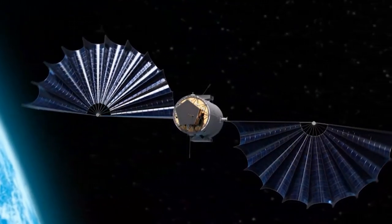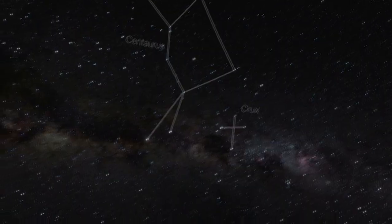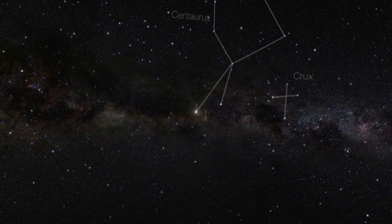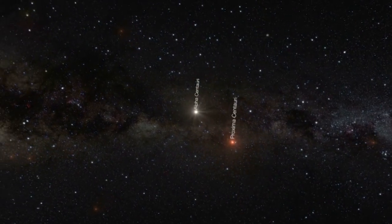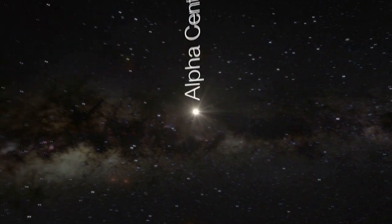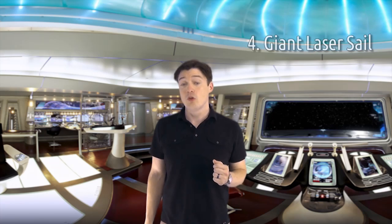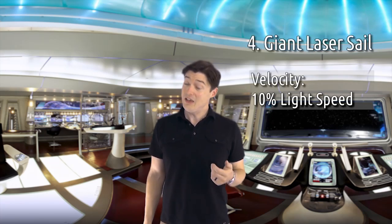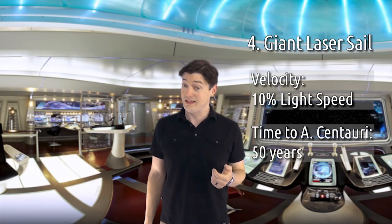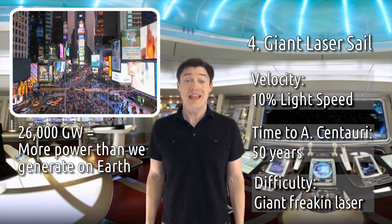Or you could use no fuel at all and just sail to another star. The problem is interstellar space doesn't get much sunlight, so even tiny ships would take tens of thousands of years to reach another star. You can speed this up by beaming laser power to the ship, which could cut the travel time to a comfortable fifty years if you had a hundred kilometer sail and a 26,000 gigawatt laser.